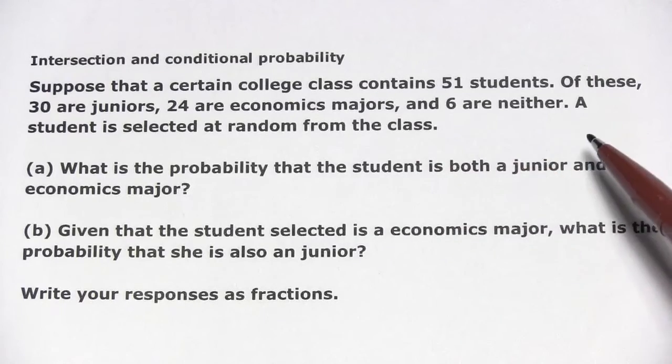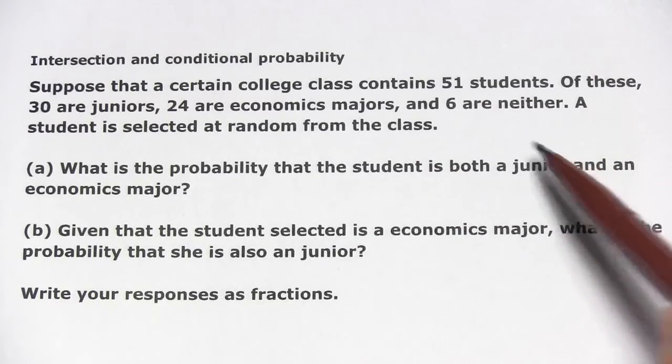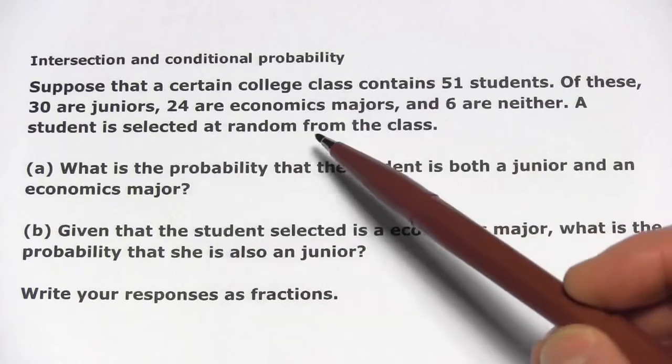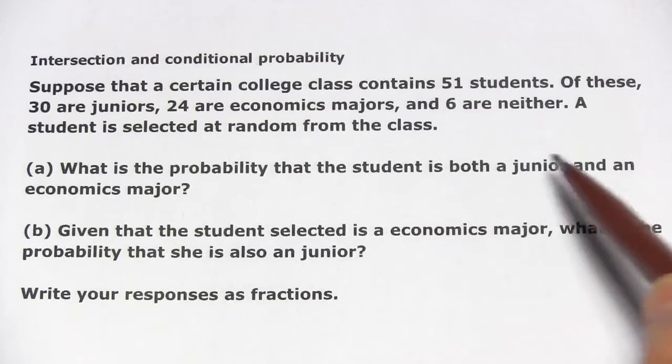It says, suppose that a certain college class contains 51 students. Of these, 30 are juniors, 24 are economics majors, and 6 are neither.